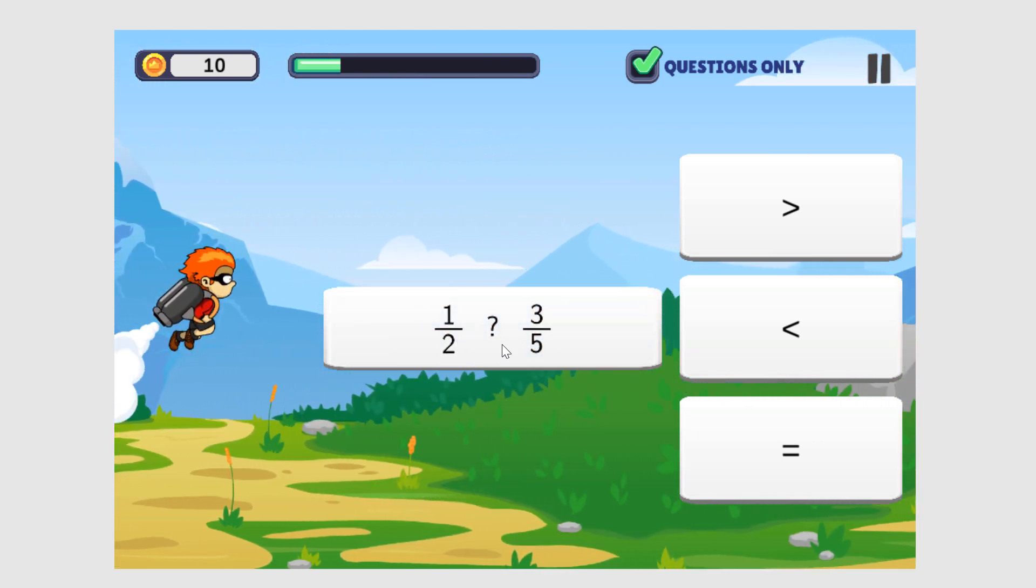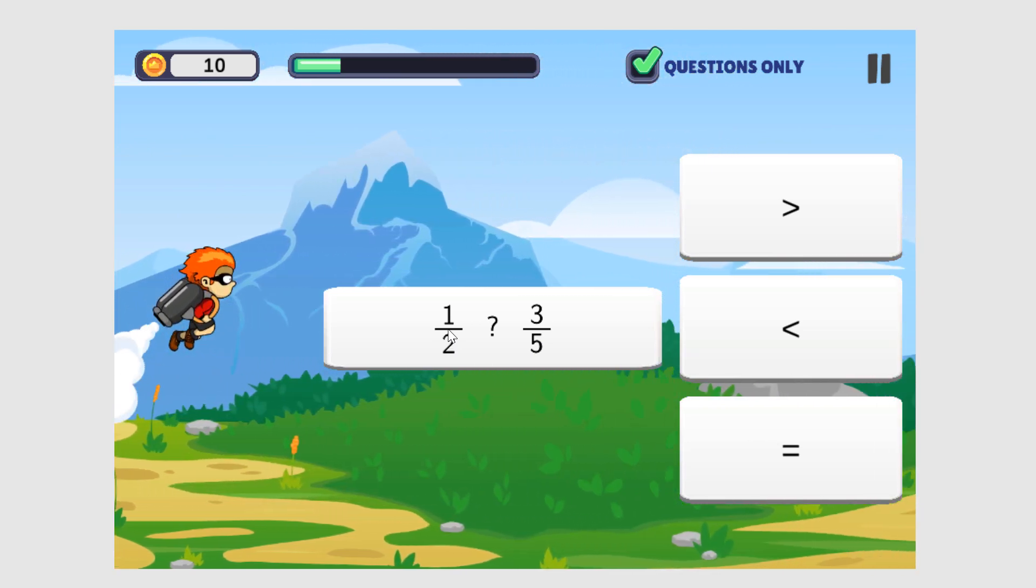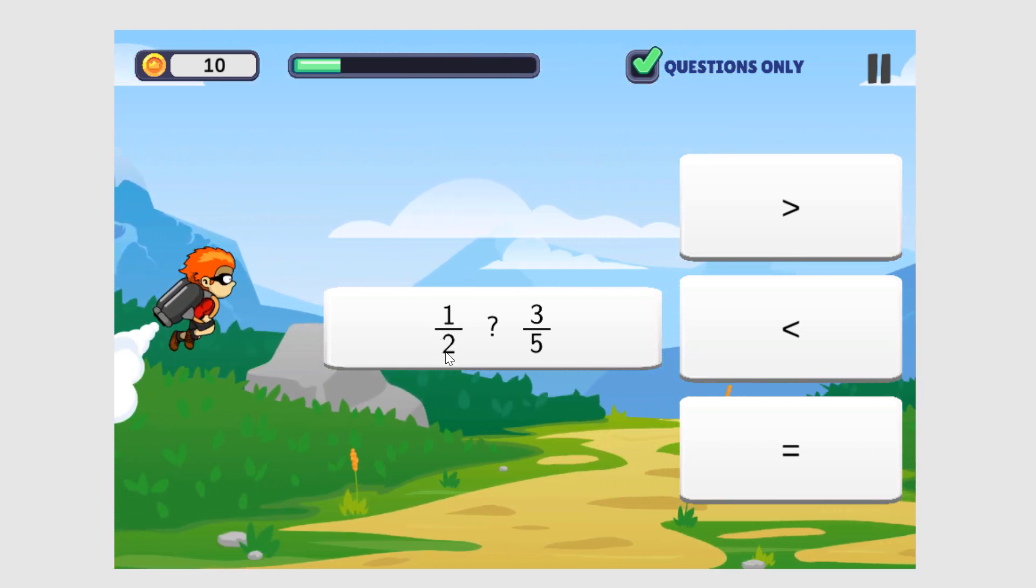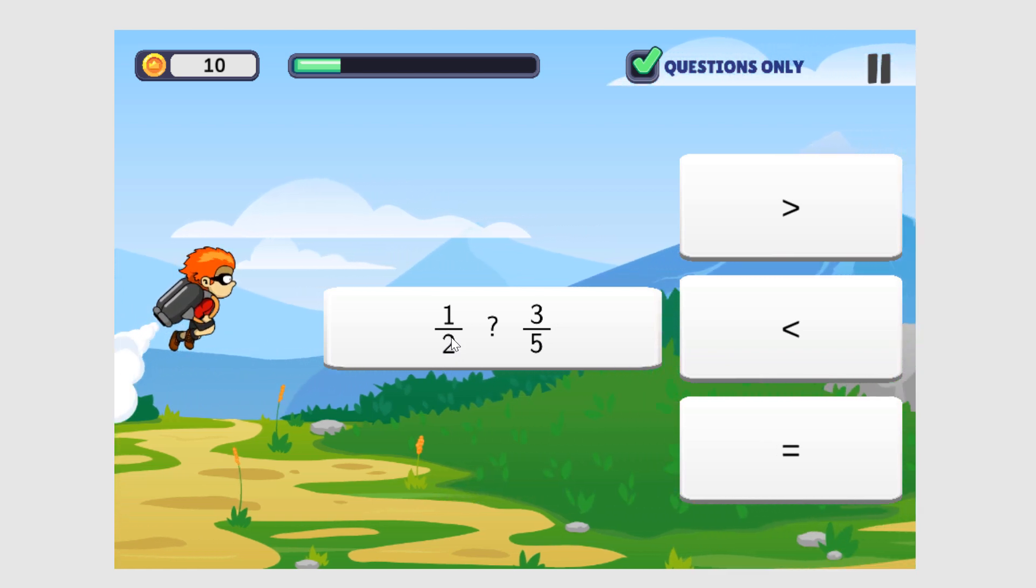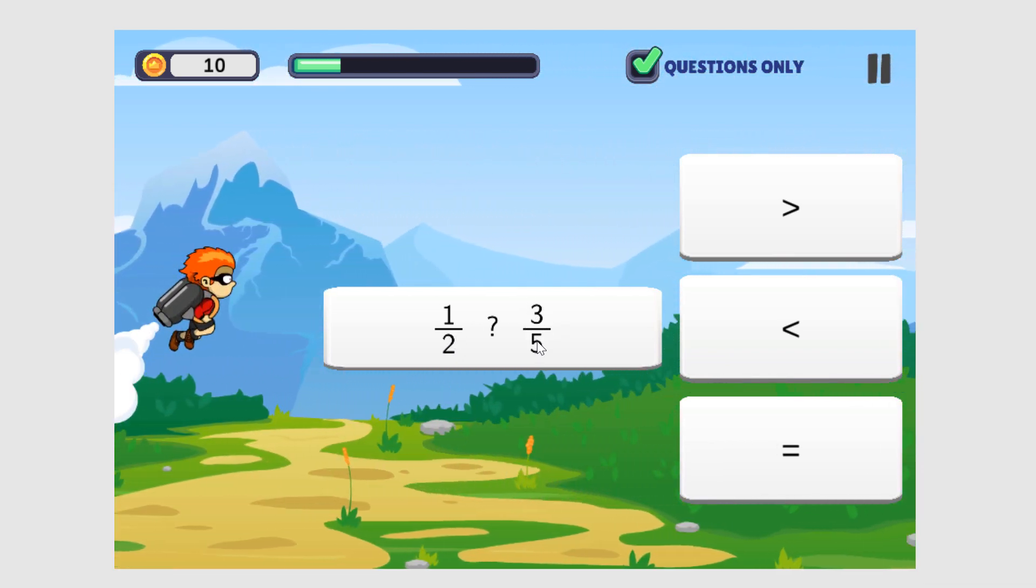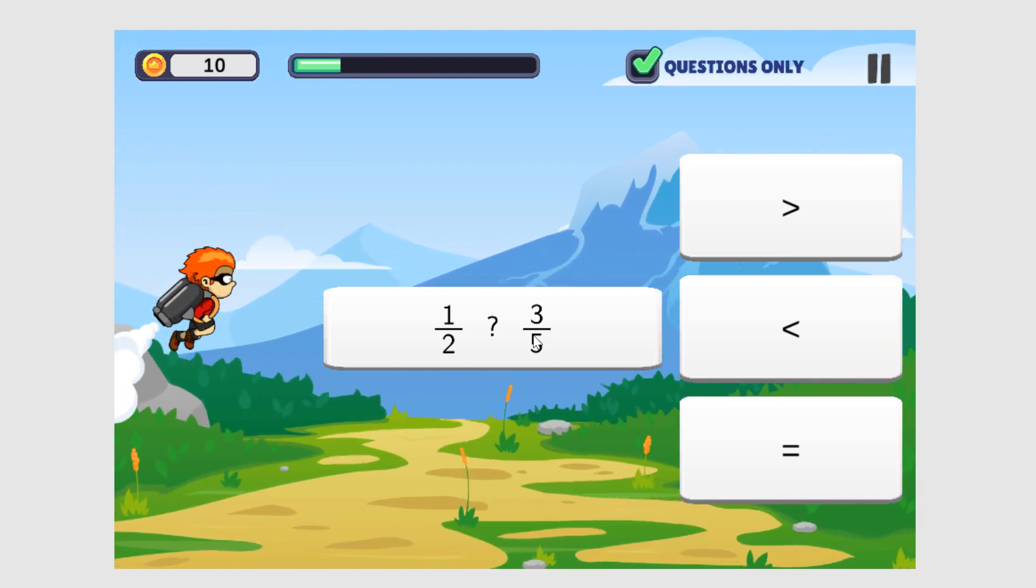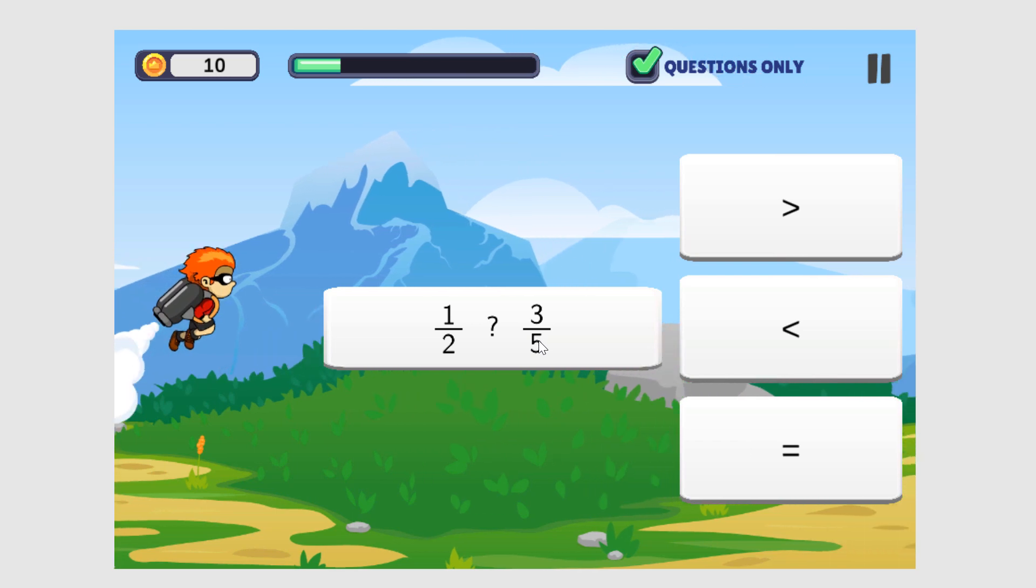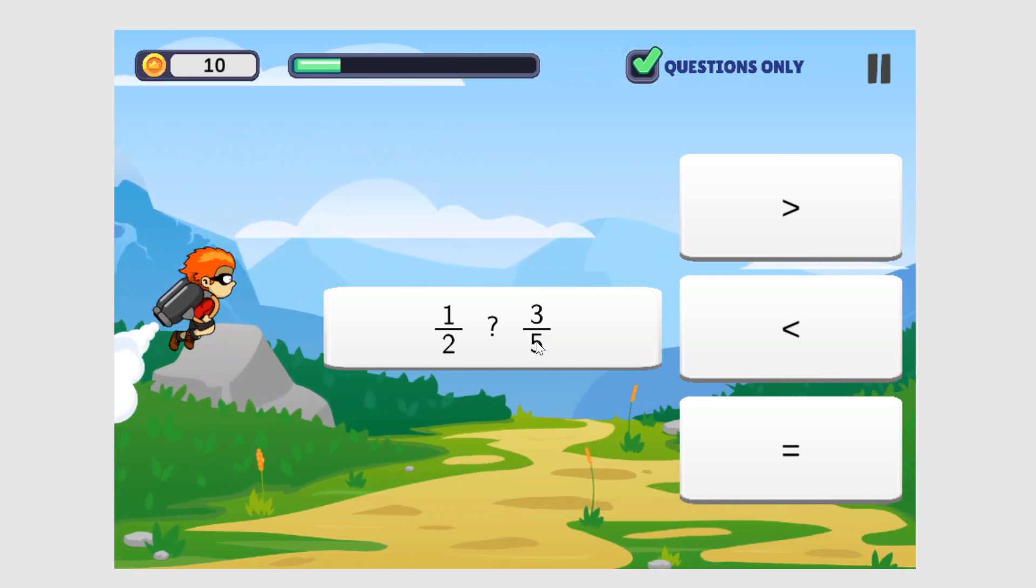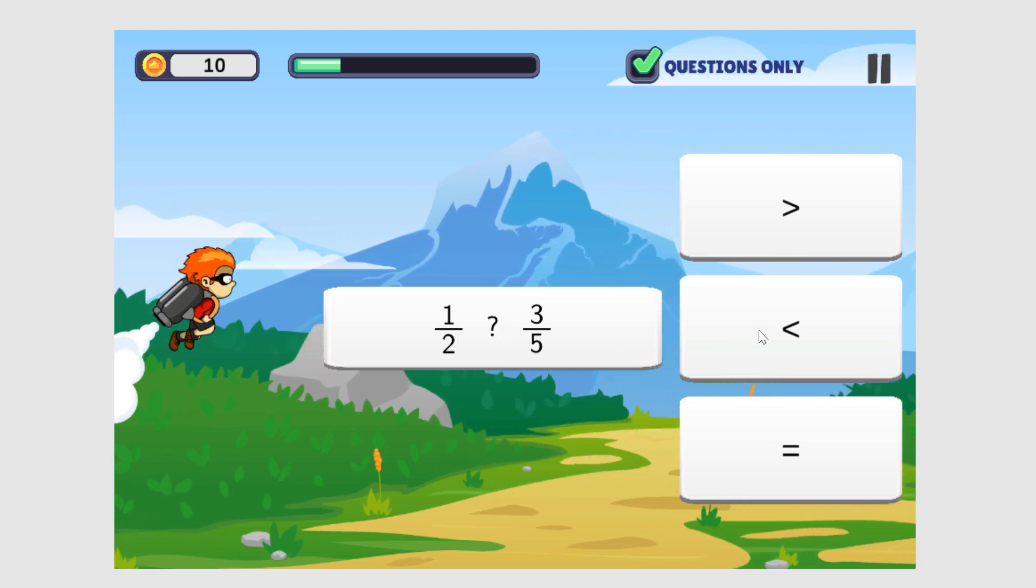1 half compared to 3 fifths. Well, if you visualize an image that's 1 half, like half of a pizza, that is definitely smaller than something that has 3 fifths. Now, 2 fifths would be smaller than half, but 3 fifths would be more. So 1 half is smaller than, less than.